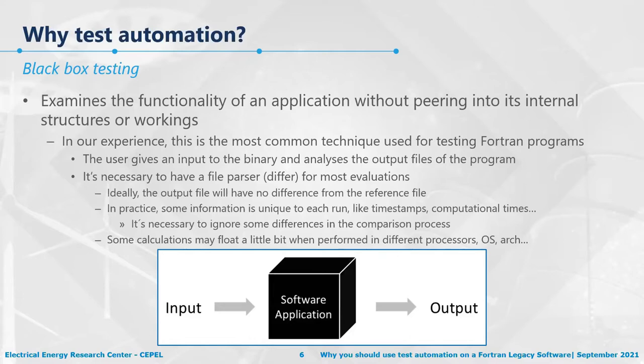The core of black box testing is the opposite of unit testing. In unit testing you look at very small things in the code; in black box testing you take the macro vision — you don't look at the code itself, you just run it. Black box testing examines the functionality of an application without peering into its internal workings. In our experience it is the most common technique used for testing Fortran programs.